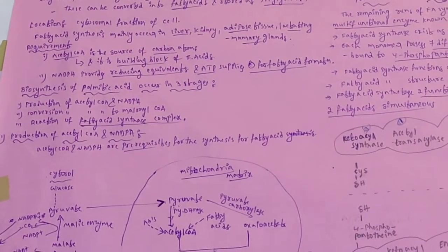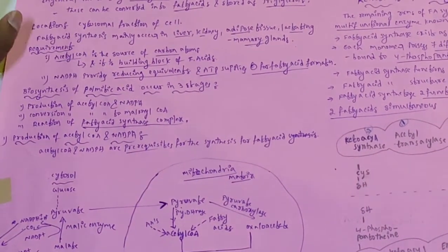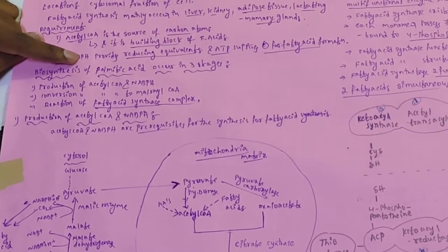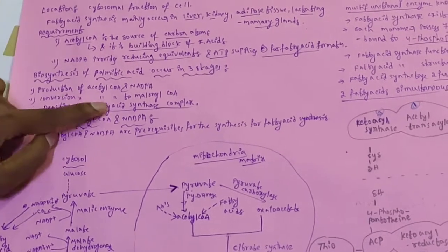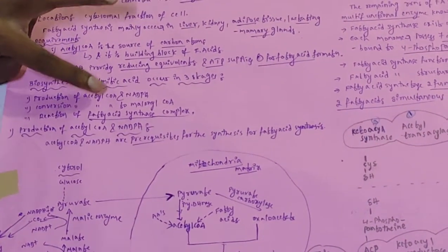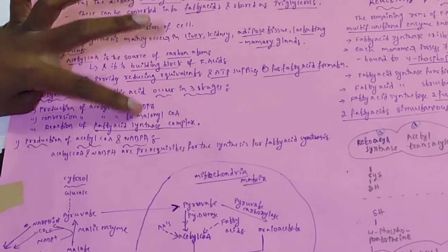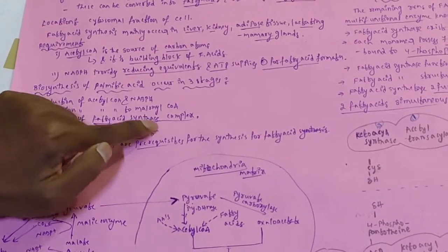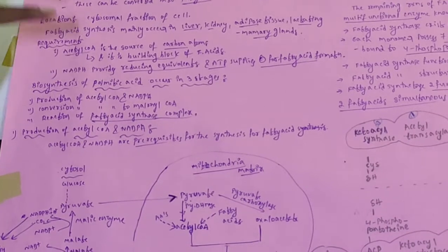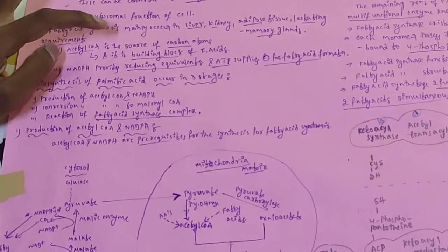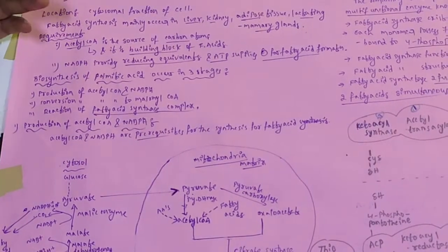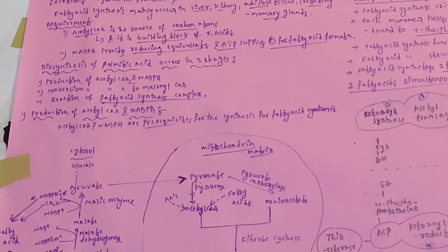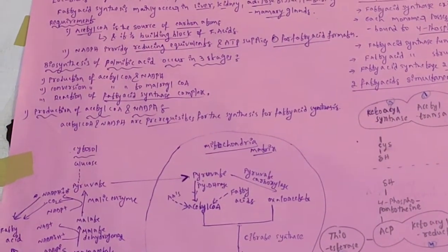Biosynthesis of palmitic acid occurs in three stages: first, production of acetyl-CoA and NADPH; second, conversion of acetyl-CoA to malonyl-CoA; and third, reactions of the fatty acid synthase complex. Without acetyl-CoA and NADPH, palmitic acid cannot be produced. Acetyl-CoA supplies carbon atoms and NADPH supplies reducing equivalents, that is hydrogens.